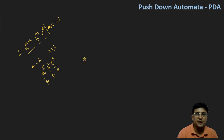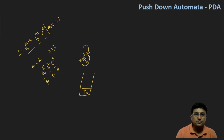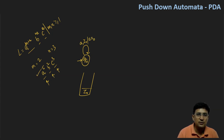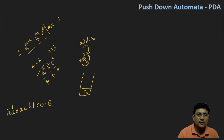Starting with the q0 state, we take a stack where Z0 is the start symbol of the stack. Initially, if we see 'a' with Z0 as the stack top, we push 'a'. So for input symbol 'a' with stack top A, we push the A symbol.